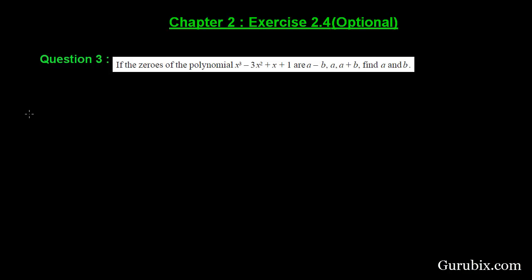First of all, we shall collect the given polynomial and denote it by p(x). Therefore, p(x) = x³ - 3x² + x + 1. Since we are given its zeros: a - b, a + b, and a.